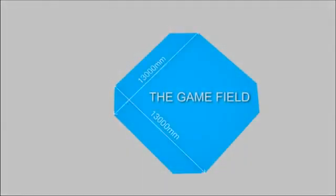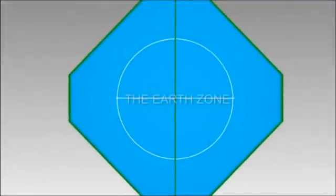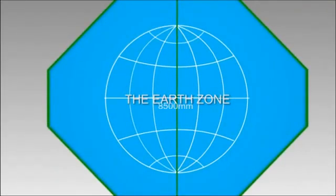The game field consists of an area having the dimension of 13 meters by 13 meters and divided equally by an iron. The Earth zone is in sphere shape with diameter of 8.5 meters marked by the wide guidelines representing the meridian and the parallel.